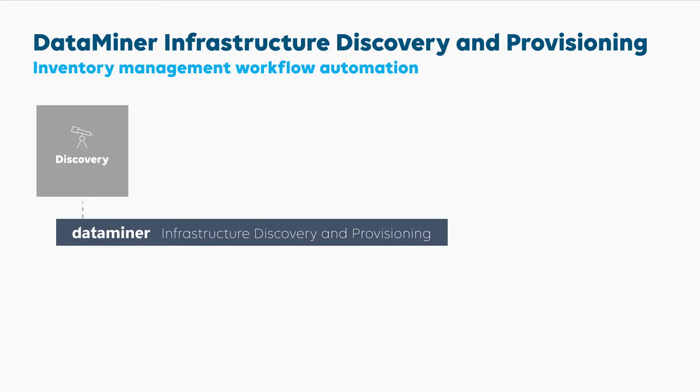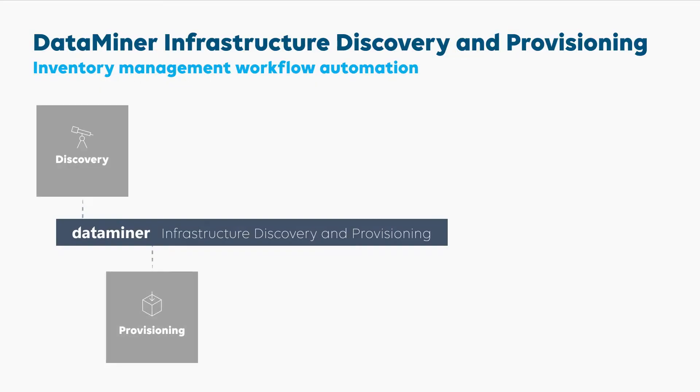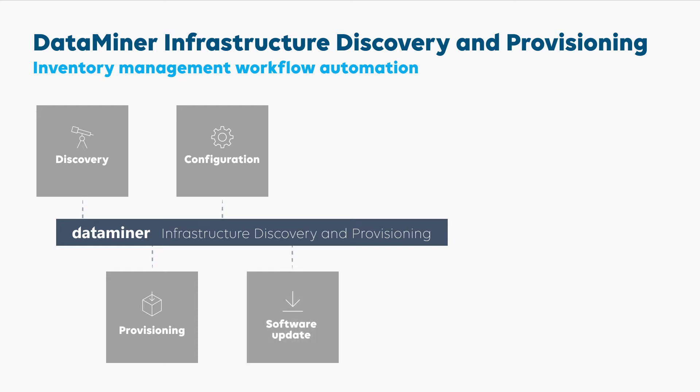Our DataMiner Infrastructure Discovery and Provisioning app, or simply IDP app, enables you to integrate all of this, eliminating human error and maximizing reliability and security. The IDP app manages the onboarding of data sources — automatic discovery of elements and connections and provisioning, if needed, through IS-04 — but also configuration management: taking config backups, restoring standard configurations automatically to data sources, software version management with automatic updates, and rack management.